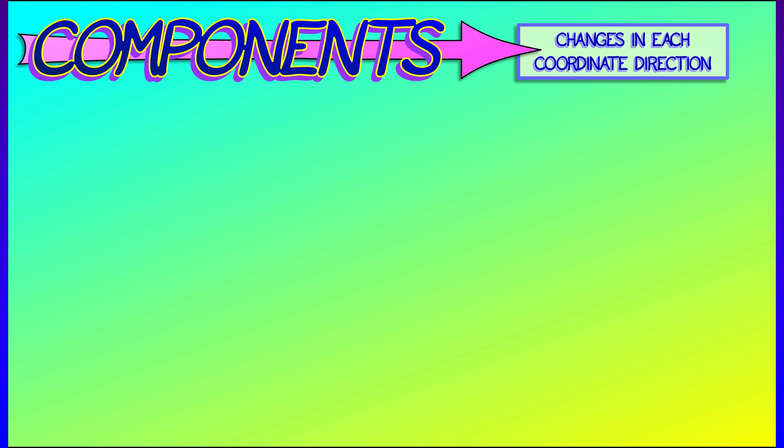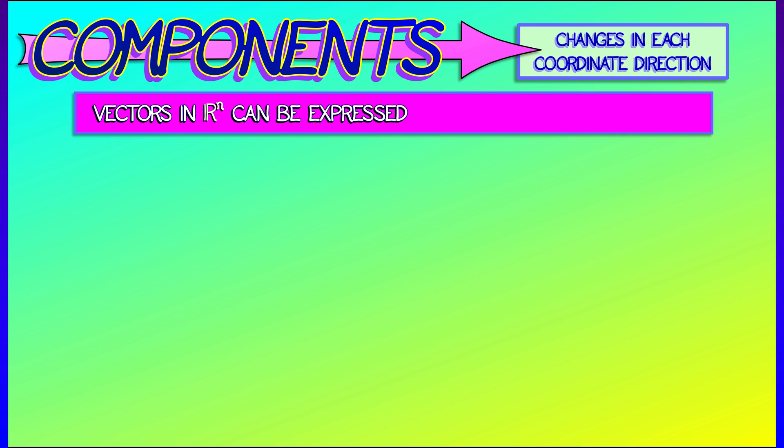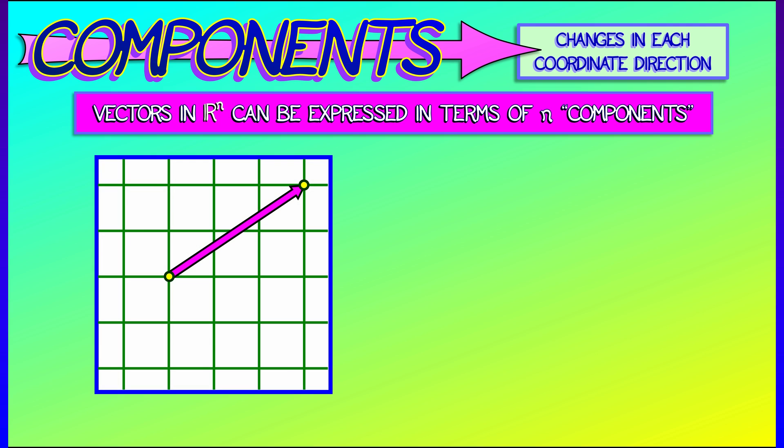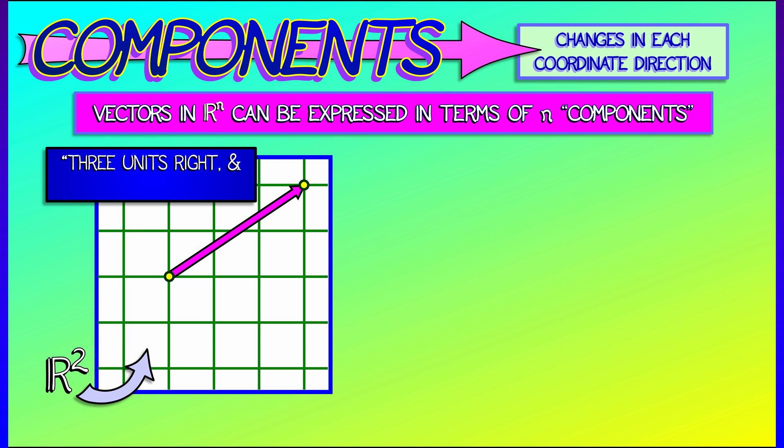that is, changes in each coordinate direction. We're going to fix some set of coordinates in Rn, let's say x and y coordinates, in R2. And then we're going to specify vectors in terms of how far you move in each direction. For example, the vector (3, 2) means you move three units to the right along the x-axis and two units up along the y-axis.